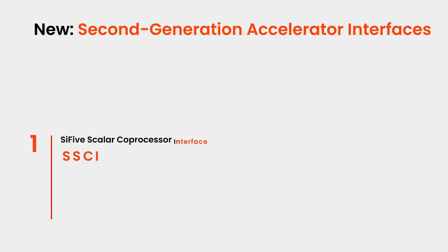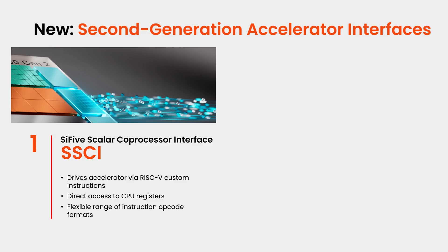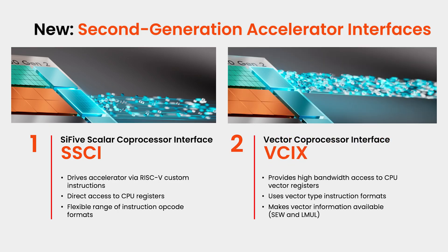Let's take a closer look at those four key new features. The first is the new accelerator interfaces. The SSCI is a scalar coprocessor interface that allows the CPU to generate custom instructions and send them over to the customer's IP, including register values from the scalar registers on the CPU. We already had the VCIX interface — the Vector Coprocessor Interface Extension — which allows instructions to be sent together with data coming in and out of the vector register files. Depending on the use case, customers may use one or both of these to connect their accelerator to the Sci-5 core.